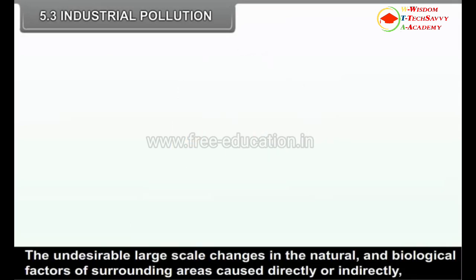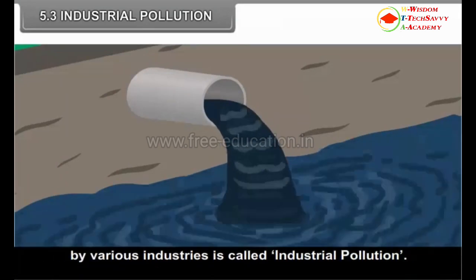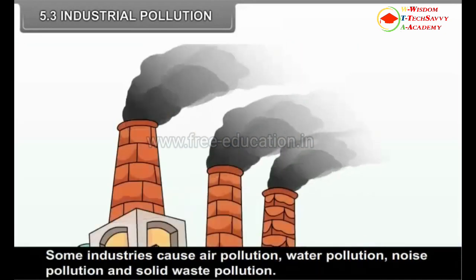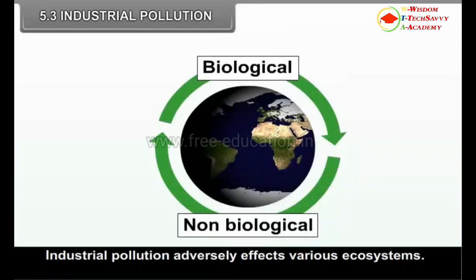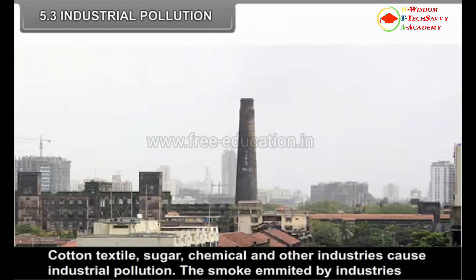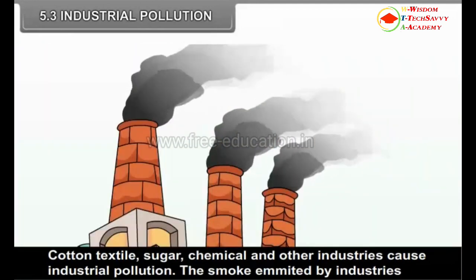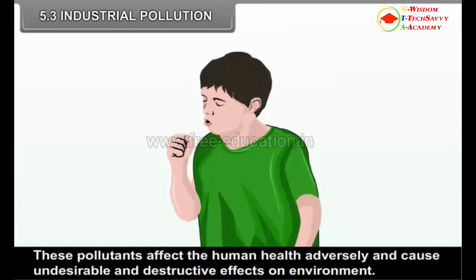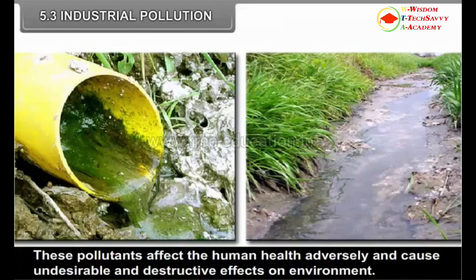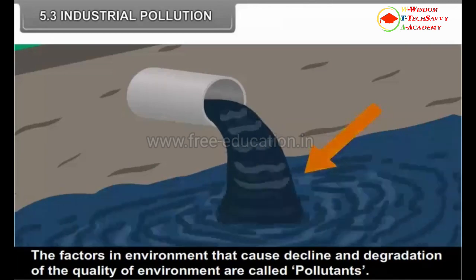5.3 Industrial Pollution. The undesirable large-scale changes in the natural and biological factors of the surrounding areas caused directly or indirectly by various industries is called industrial pollution. Some industries cause air pollution, water pollution, noise pollution and solid waste pollution. Industrial pollution adversely affects various ecosystems. Cotton textile, sugar, chemical and other industries cause industrial pollution. The smoke emitted by industries, water and solid waste contain pollutants, which affect human health adversely and cause undesirable and destructive effects on the environment. The factors in the environment that cause decline and degradation of the quality of environment are called pollutants.